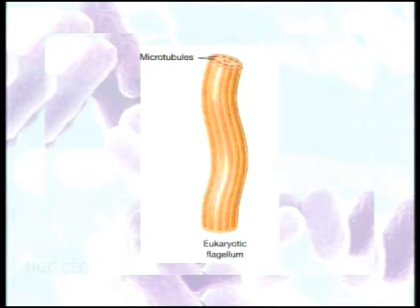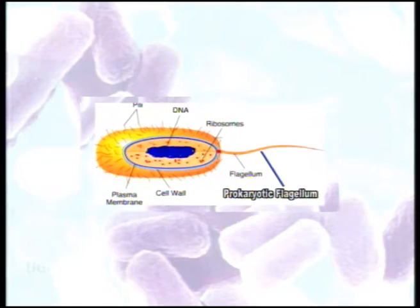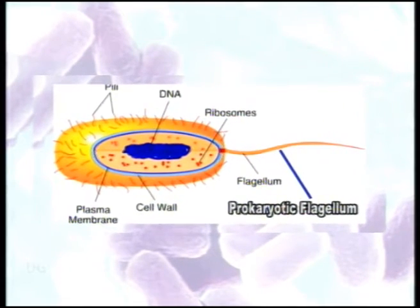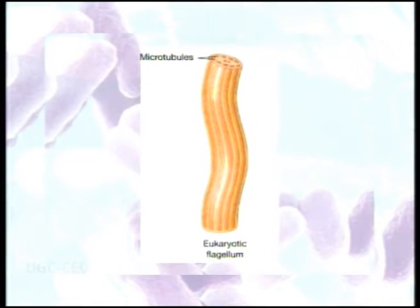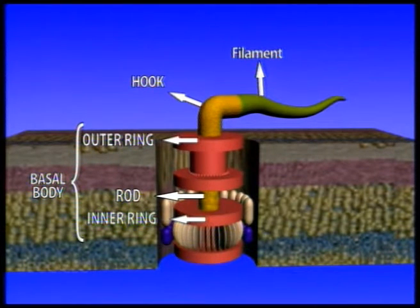Flagella are also present in some eukaryotes, but the prokaryotic flagellum is about one-tenth the size of the eukaryotic flagellum, being about 10 to 20 micrometers in length. The bacterial flagellum differs from the eukaryotic flagellum in lacking the typical microtubules with 9+2 arrangement and a plasma membrane. Bacterial flagella are composed of long rigid strands of a specific protein called flagellin, arranged in chains wound around a triple helix with a hollow central core. Each flagellum is attached to the cell membrane by a basal region consisting of proteins other than flagellin.